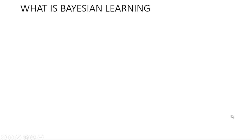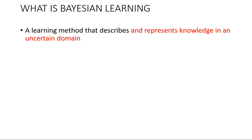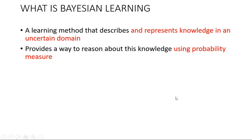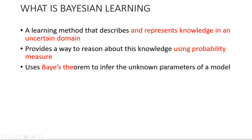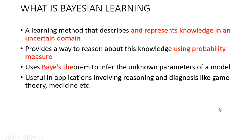Today's session will focus mainly on the theory and concept of Bayesian learning. Bayesian learning is a learning method which describes and represents knowledge in an uncertain domain. It mainly uses a probability measure to reason this knowledge and uses the Bayes theorem to infer unknown parameters. The main applications include reasoning, diagnosis, game theory, and medicine.